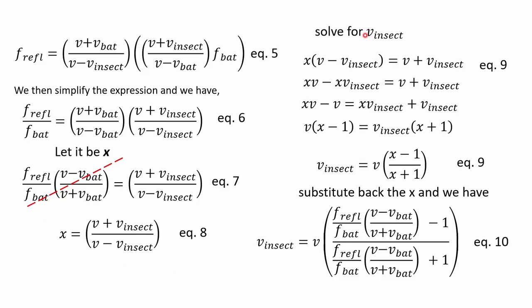To solve for v_insect, we distribute x on these terms and group similar terms—the v, which is the speed that is given, and v_insect. Upon rewriting, we arrive at equation nine.